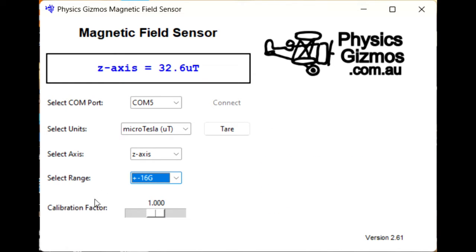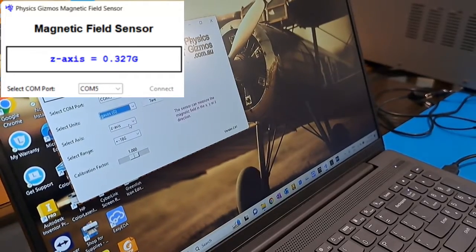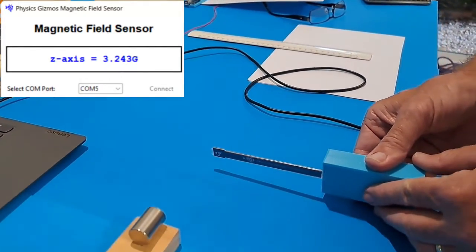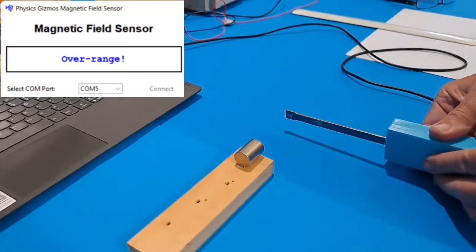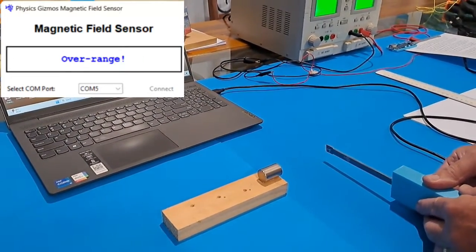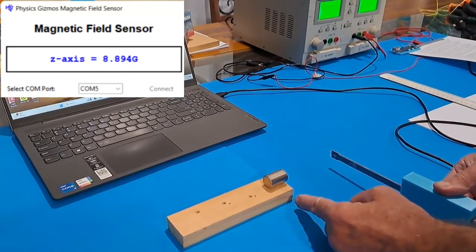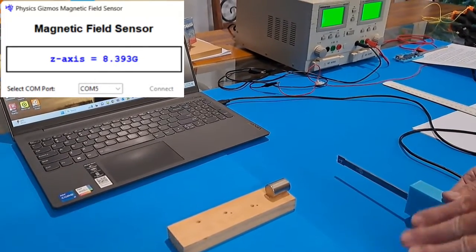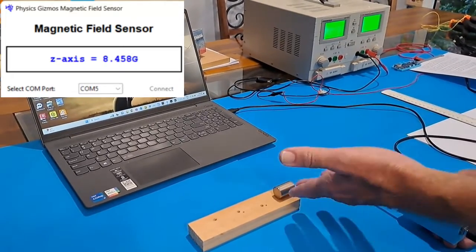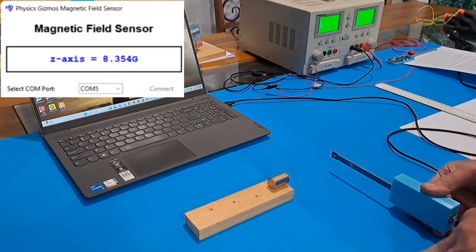So let's set it running. At the moment it's on the z-axis. Let's put it on gauss. And you can see here, as I move in and out like this, if I get too close it goes over range. This is a particularly strong magnet, and this is really designed to measure magnetic fields produced from an electric current, not from a massive neodymium magnet like that.